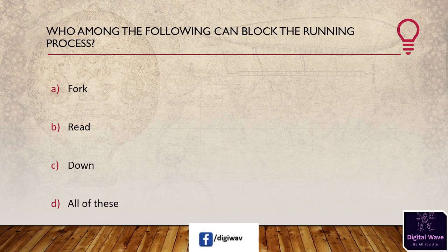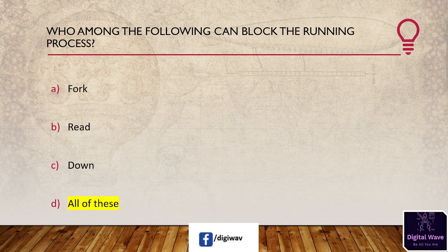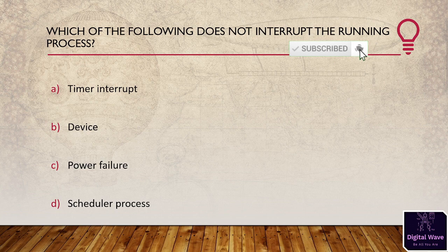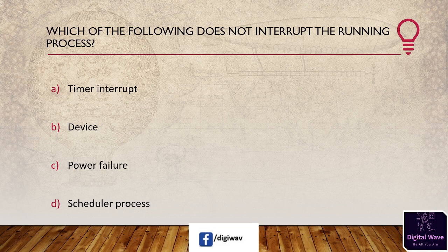Next question: who among the following can block the running process? Options: fork, read, down, all of these. The right answer is all of these. Next question: which of the following does not interrupt the running process? Options: time interrupt, device, power failure, scheduler process. The right answer is scheduler process. The scheduler process does not interrupt any running process. Its job is to select processes for long-term and short-term scheduling.